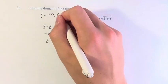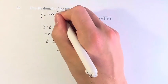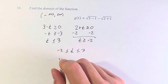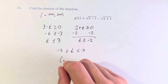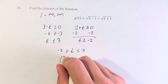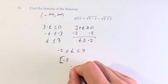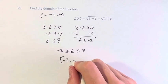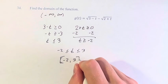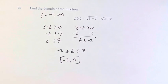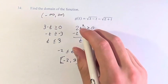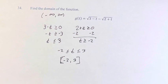If you want to do this in interval form, like I have up here, you can do negative 2. Make sure that's a hard bracket because we're including negative 2 and 3. But either way, this is the domain of the function g of t.